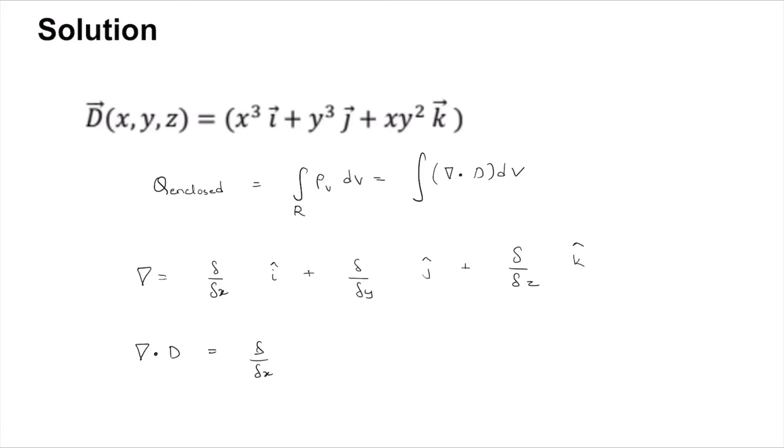∂/∂x of x³, ∂/∂y of y³, ∂/∂z of xy². So the multiplication translates to doing differentiation with the differential operator, which gives 3x² + 3y² + 0, which is 3 times (x² + y²).